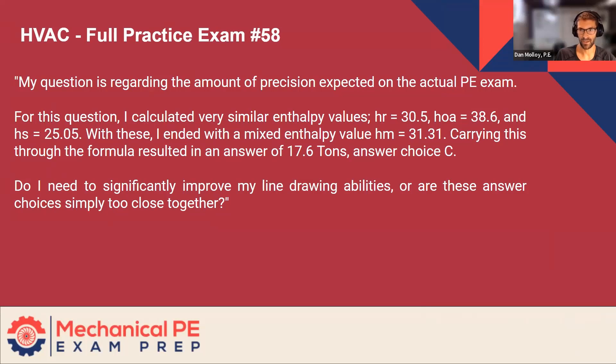For this question, I calculated very similar enthalpy values. Enthalpy return is 30.5, the outside area enthalpy is 38.6, and the supply enthalpy is 25. With these, I ended with a mixed enthalpy value of 31.3. Carrying this through the formula resulted in an answer of 17.6 tons, answer choice C.